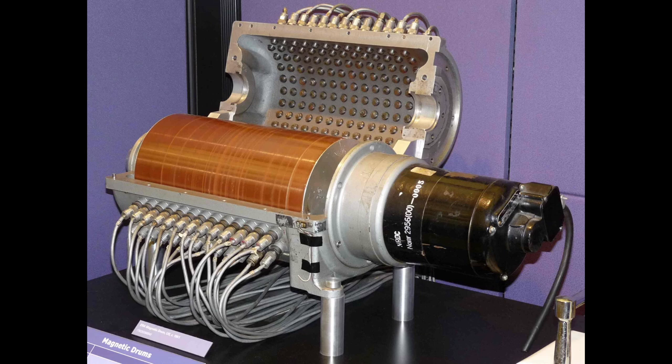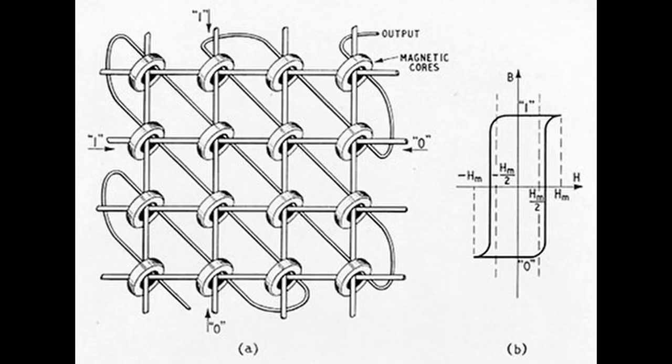In the late 1940s, a new type of memory called magnetic core memory was developed. Magnetic core memory used small, magnetized metal rings to store data. It was faster and more reliable than magnetic drum memory, and it could store more data.